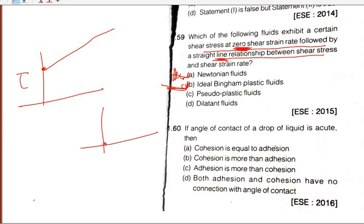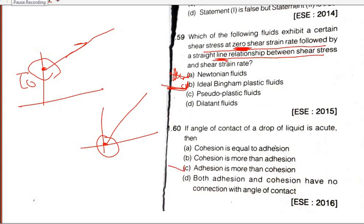For a Newtonian fluid, shear stress is zero at zero deformation. For Bingham plastic, there is a non-zero yield value and then it increases above that. If the angle of contact of a drop of liquid is acute, then adhesion force is more than cohesion force.